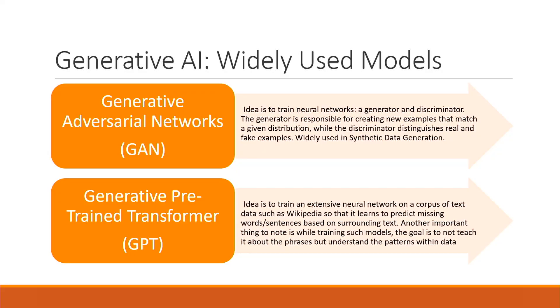We all know about text-to-video, text-to-images, and all those tools that have come up — they are all leveraging Generative AI. I know we've all heard about GPT, but I still feel that GANs are not getting enough credit, because they are a powerful method specifically for synthetic data. That's why I wanted to highlight that alongside GPT, we have this very powerful GANs model that has a generator and a discriminator.